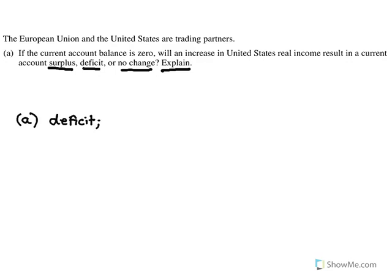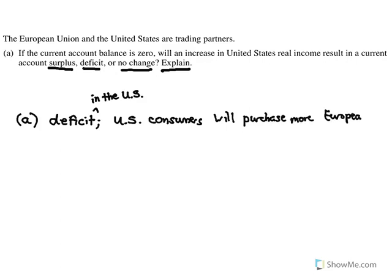I'll put 'deficit in the U.S.' to specify that, so the AP reader knows I'm looking at it from the U.S. perspective. U.S. consumers will purchase more European goods, increasing imports. The primary thing in the current account is the trade balance — the difference between your exports and imports. If U.S. consumers have more real income, they're going to spend more on European goods, resulting in more imports, a negative trade balance, and therefore a current account deficit.